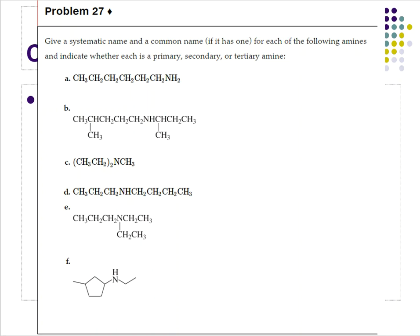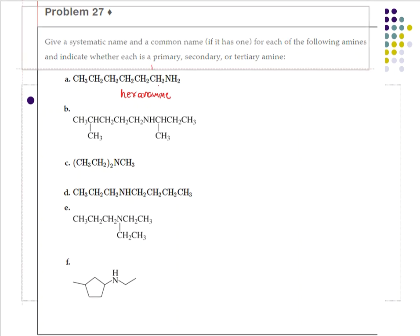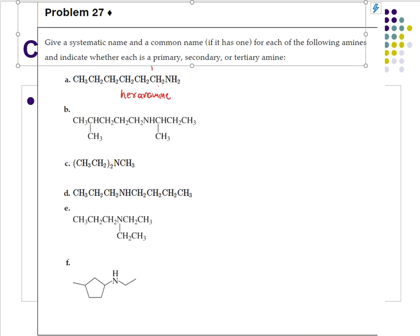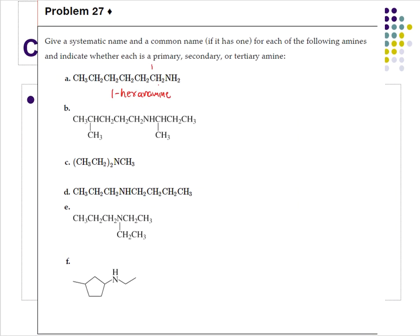For A, the longest carbon chain is one, two, three, four, five, six — so this is a hexane. I drop the E and add the word amine, and this NH2 group is attached to the first carbon of that chain, so one-hexanamine is the IUPAC name of that structure.